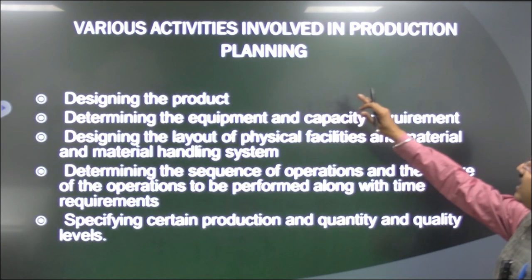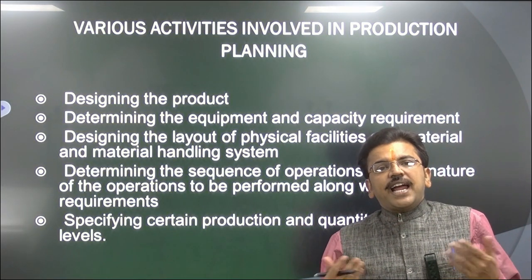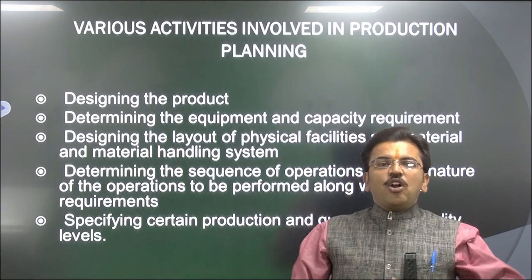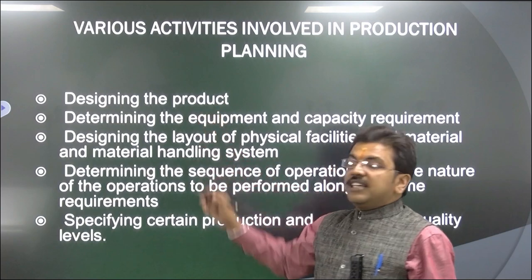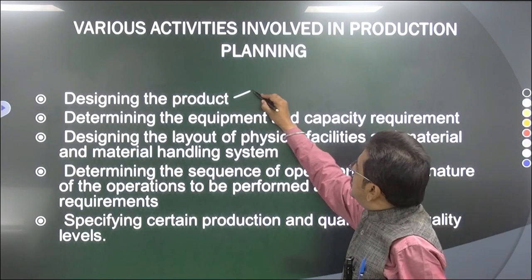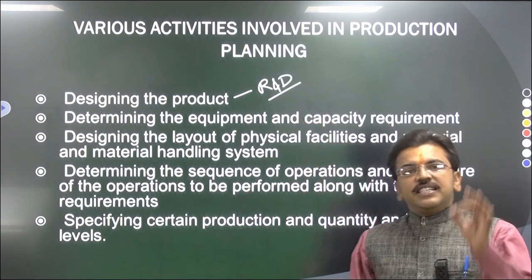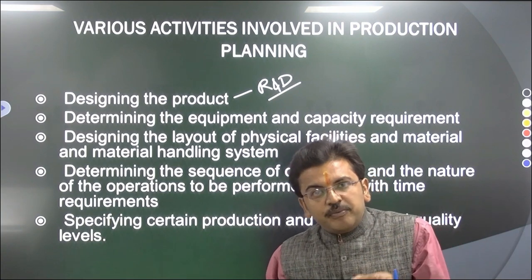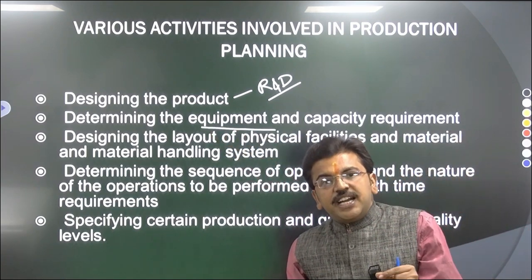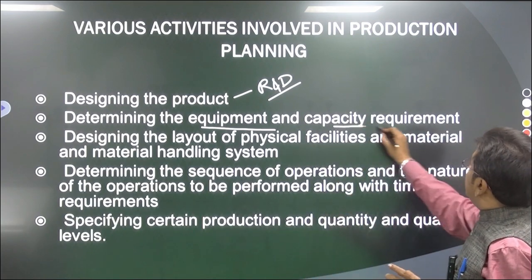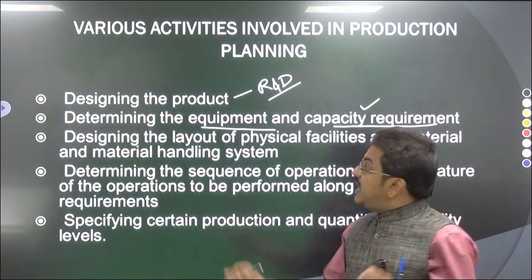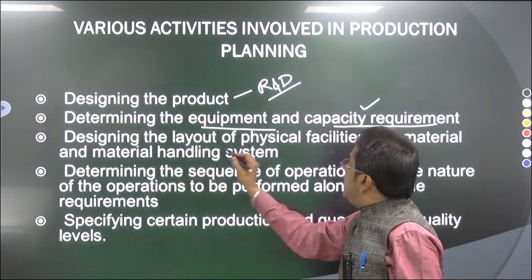Now let's see what activities are involved in Production Planning and Control. The first thing is designing of the product — what type of product is being required. A lot of R&D research and development has been done to decide what product we are going to make. Next is determining the equipment and capacity requirement. After R&D we define the equipment needed to make that specific product and what is the capacity requirement — what type of machine we have to install so that the desired output can be fulfilled.